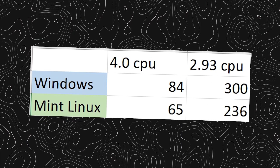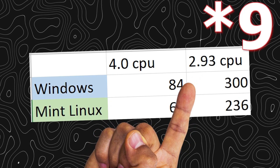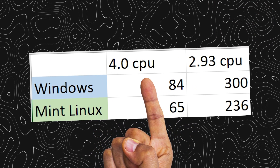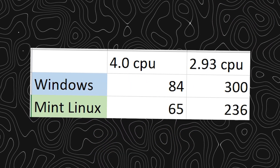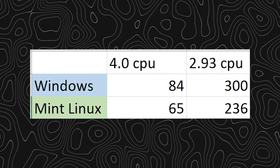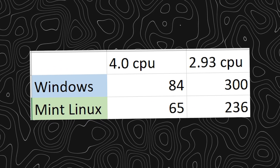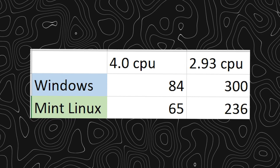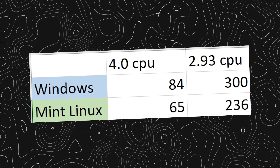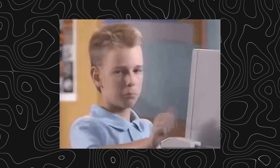Looking at the results: on Windows I got 300 seconds for the 2.83 version and 84 seconds for 4.0. Those same renders got 236 and 65 seconds respectively on Linux. So on version 2.83 I got a 27% time reduction, and for 4.0 that's a 28% time reduction — an average of 28% faster rendering just by using Linux.